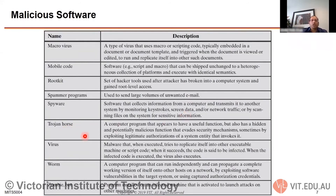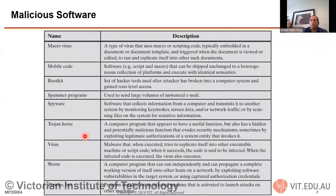A Trojan horse is a very common type of attack. It is a program that contains malicious code but appears harmless — like word.exe, excel.exe, or notepad.exe. It looks like a standard program, but the executable has been compromised. When you double-click on it thinking it's a normal program, the trojan horse backdoor embedded inside that code gets invoked.